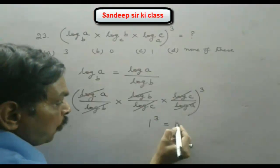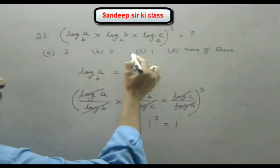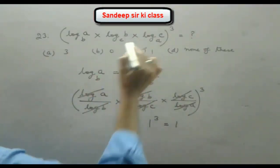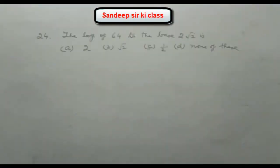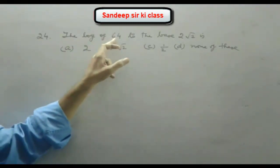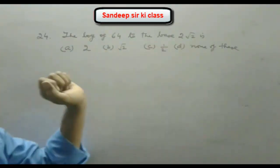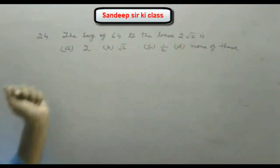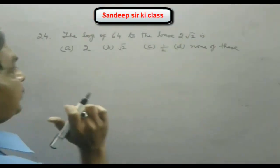1 to the power 3 is 1, hence the answer is option C — the value of this expression is 1. Question number 24: log of 64 to the base 2√2. The options are 2√2, 1/2, none of these.